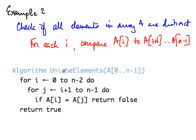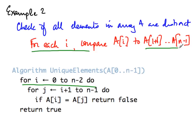Here is the algorithm UniqueElements, which takes array A from 0 to n-1. It tries each position i from 0 to n-2 — we stop at n-2 because at n-1 there is nothing to its right. For each i, the inner loop runs j from i+1 to n-1. If A[i] equals A[j], the algorithm returns false. If we complete all iterations without returning false, we return true.